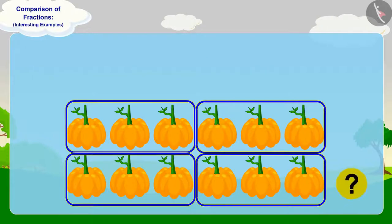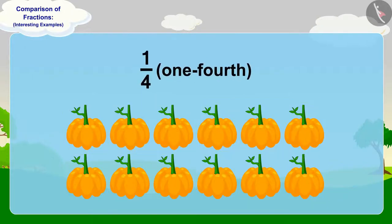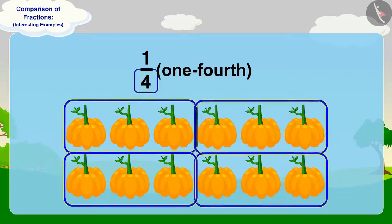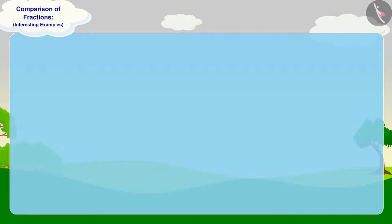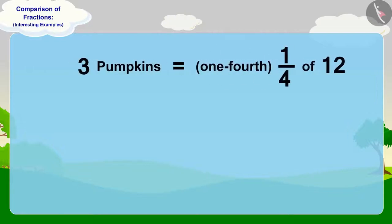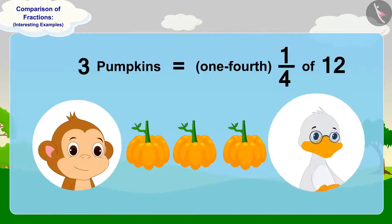Now, what will we do to get one-fourth part? Take one part out of these four equal parts. In this way, three pumpkins are one-fourth part of 12 pumpkins. Babban will give three pumpkins to uncle.